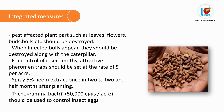Integrated pest management measures: Pest-affected plant parts such as leaves, flowers, and bolls should be destroyed. When affected bolls appear, they should be destroyed along with the caterpillar. For control of insect moths, attractive pheromone traps should be set at the rate of 5 per acre. Spray 5% neem extract once every two and a half months after planting. Trichogramma bacteria at 50,000 eggs per acre should be used to control insect eggs.